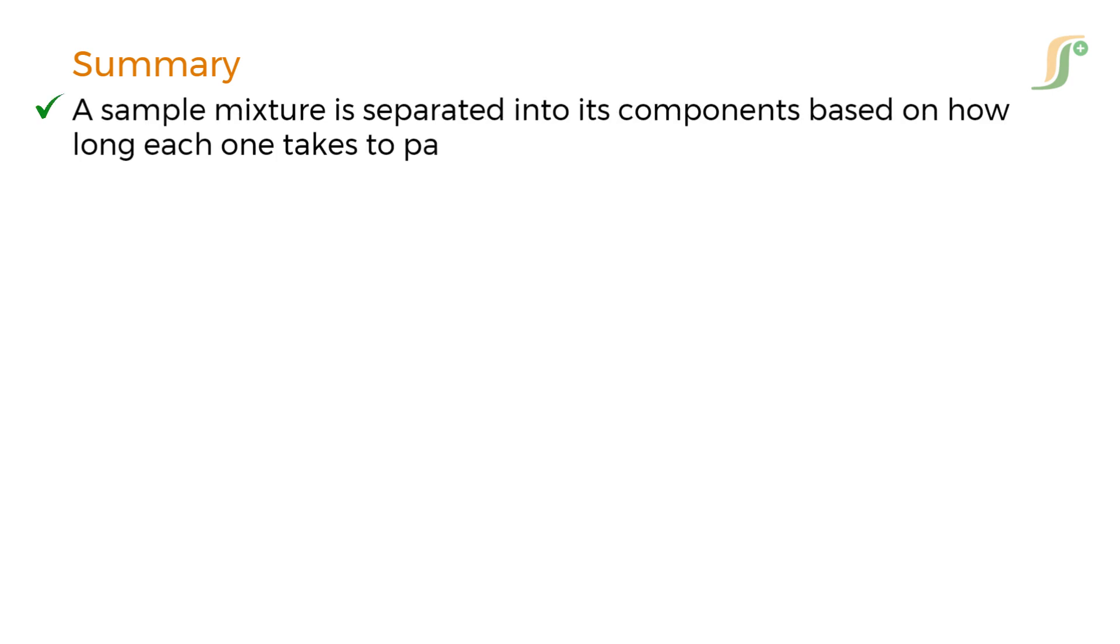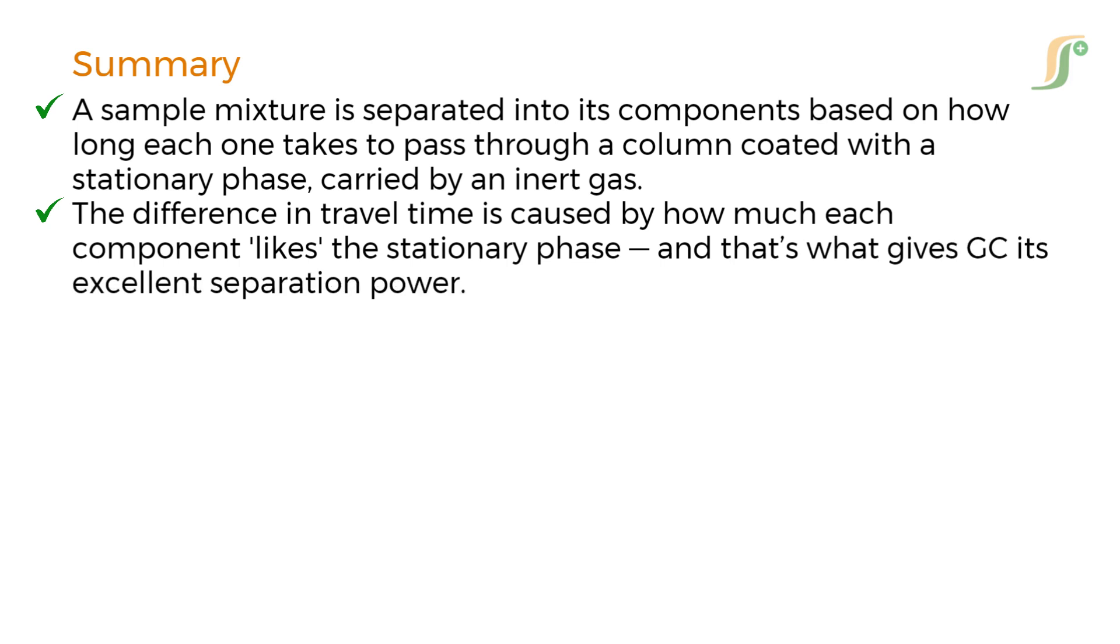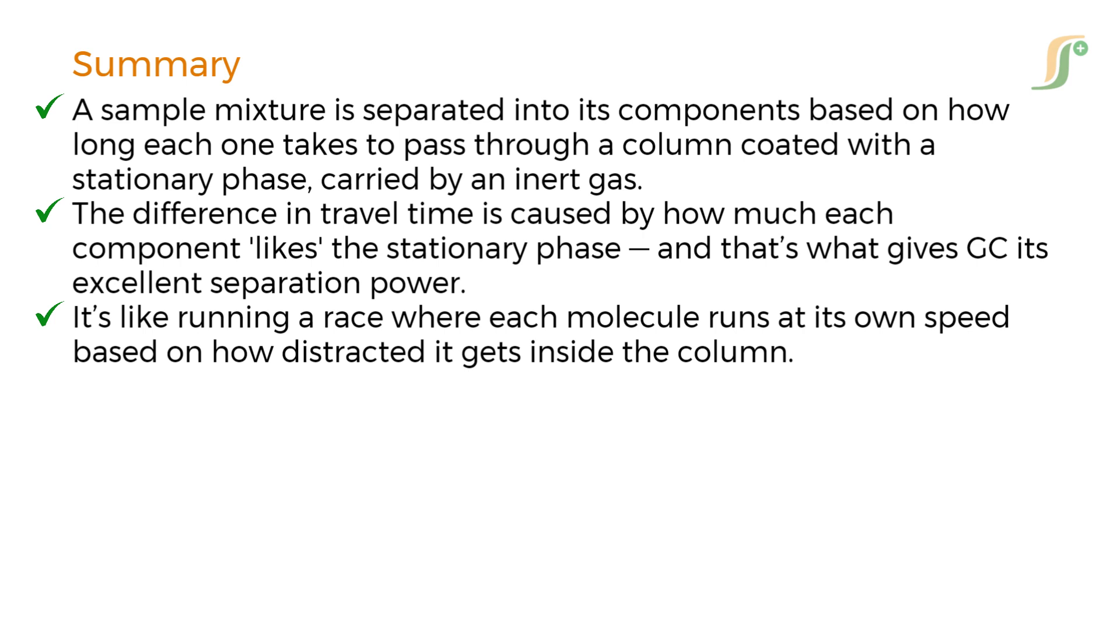So to sum up, the principle of gas chromatography revolves around this concept that a sample mixture is separated into its components based on how long each one takes to pass through a column coated with a stationary phase carried by an inert gas. The difference in travel time is caused by how much each component likes the stationary phase and that's what gives GC its excellent separation power. It's like running a race where each molecule runs at its own speed based on how distracted it gets inside the column.